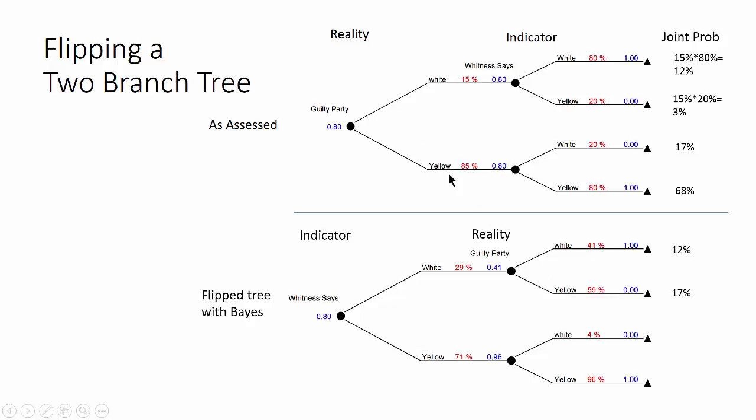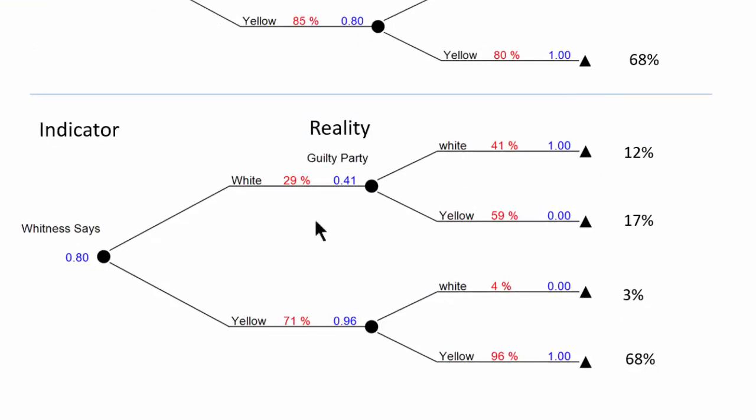Here's yellow white is 17%. Similarly we get 3% for the yellow white and 68% for the yellow yellow. So now what can we say?